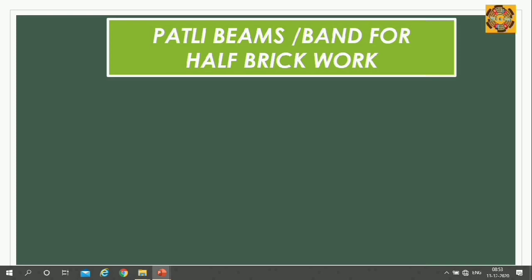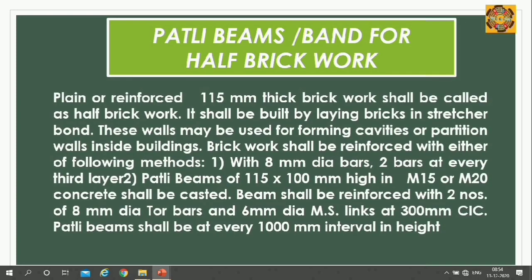Whenever half-brick work is constructed, partly beams or bands are to be constructed at every one meter interval. Mainly, reinforced concrete bands are used at every one meter interval. 115 mm brick work shall be called half-brick work. It shall be built by laying bricks in stretcher bond. These walls may be constructed forming cavities or as partition walls inside the building.